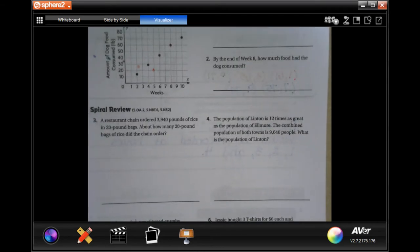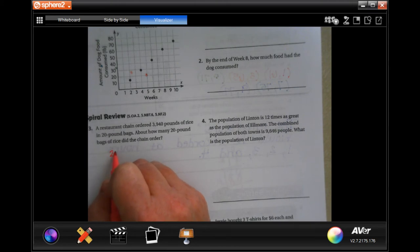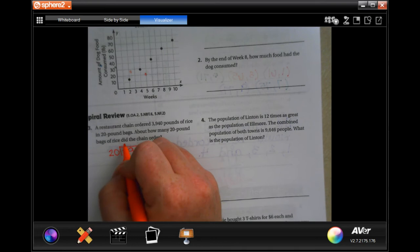You guys are going to do the lesson check just like always, and we're going to go down and do the spiral review. It says a restaurant chain ordered three thousand nine hundred forty pounds of rice in twenty-pound bags. About how many twenty-pound bags of rice should the chain order? So we're going to go 20 into 3,940. Twenty is not going to go into three, but it'll go into thirty-nine once. One times twenty is twenty, subtract, we're going to get nineteen.